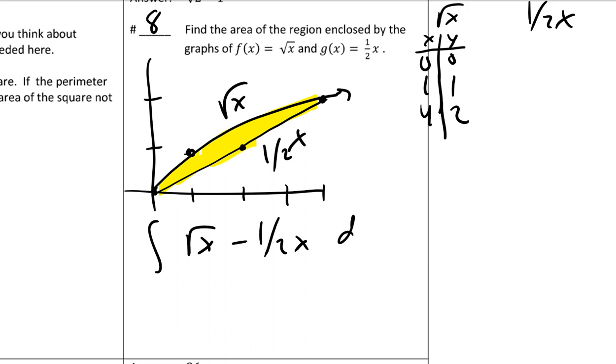And then looks like the X values are zero to four, and the picture makes that a little bit quicker.